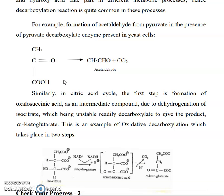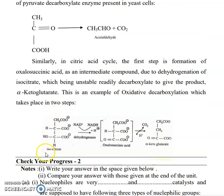Similarly, in the citric acid cycle, the first step is formation of auxilosuccinic acid as an intermediate compound due to dehydrogenation of isocitrate, which being unstable literally decarboxylates to give the product alpha-ketoglutarate. This is an example of oxidative decarboxylation, which takes place in two steps. Look at here: dehydrogenase converts NAD+ to NADH, and then auxilosuccinic acid yields alpha-ketoglutarate.